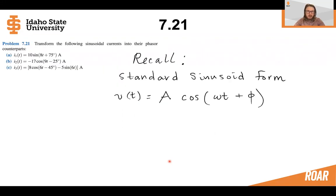So let's start with part A. Let's recall that a standard sinusoid form looks like this. This one could just be a voltage, but it has an amplitude, a cosine, a frequency omega t plus some phase.